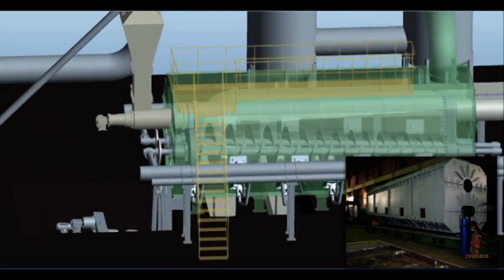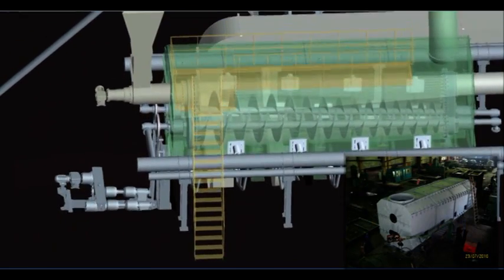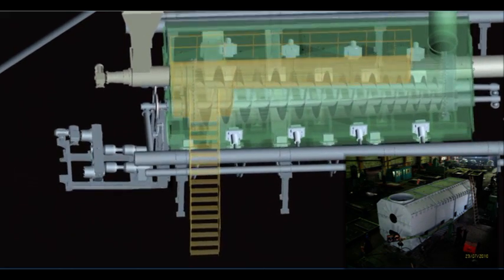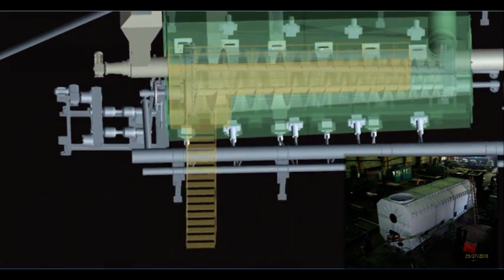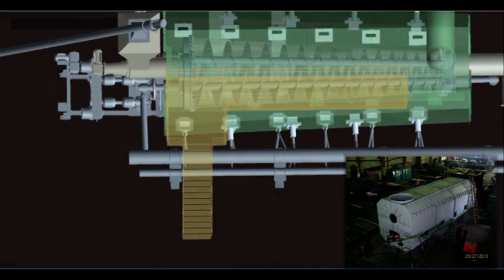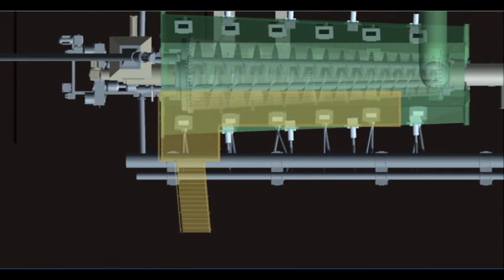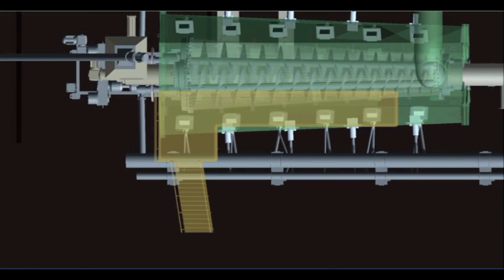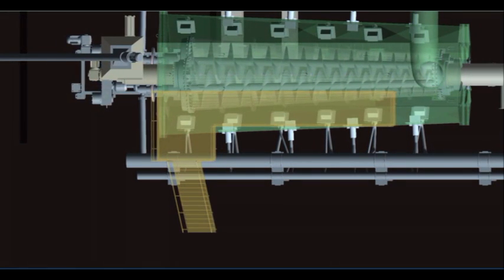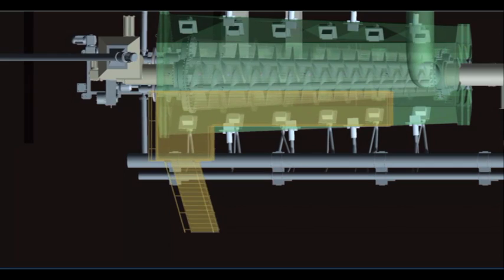The waste is moved along the retort by screw conveyors. Specific design of these conveyors allows for effective thermal transmission from retort walls to the waste materials and their additional mixing and also prevents adhesion of the waste.